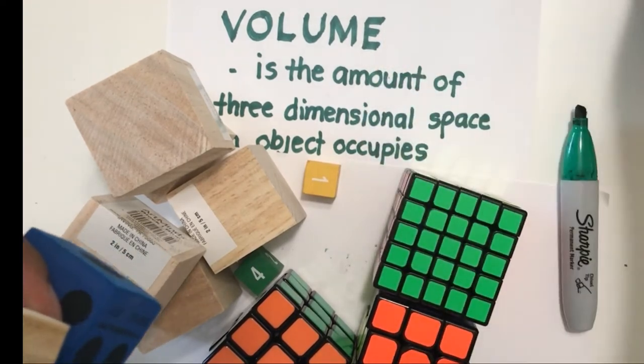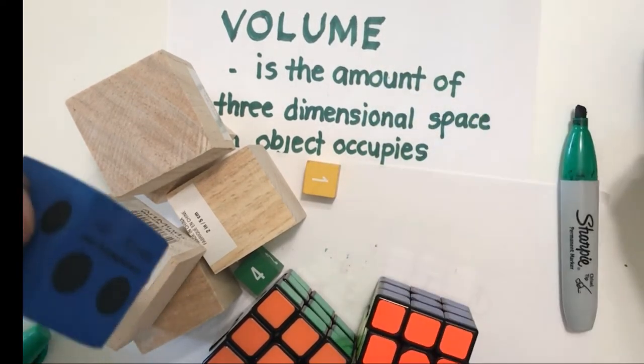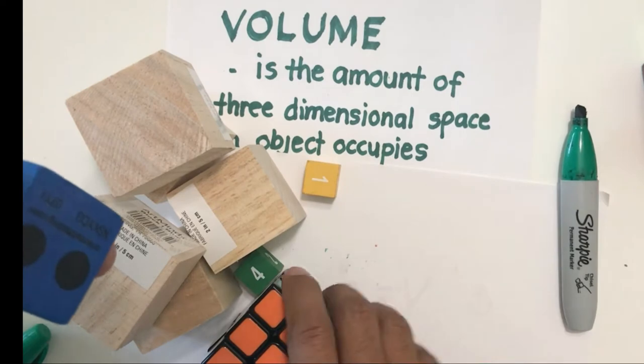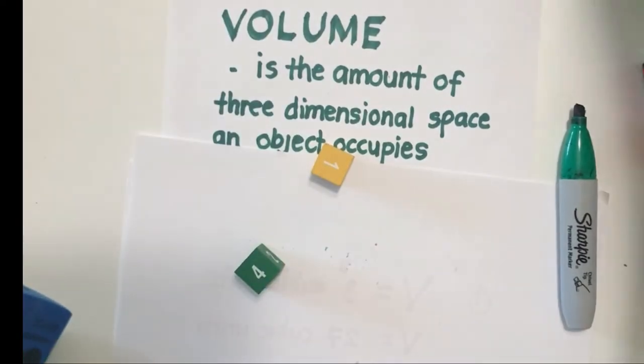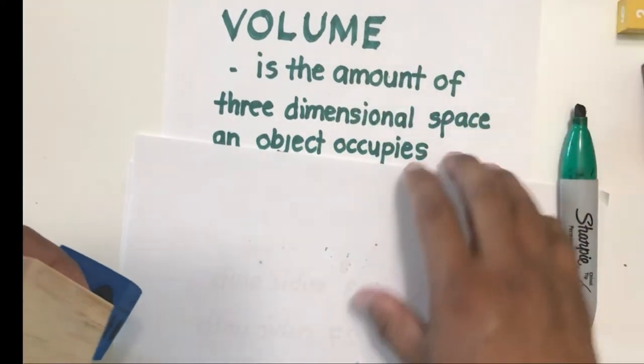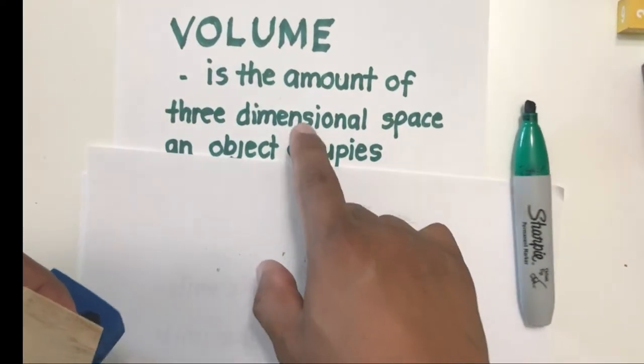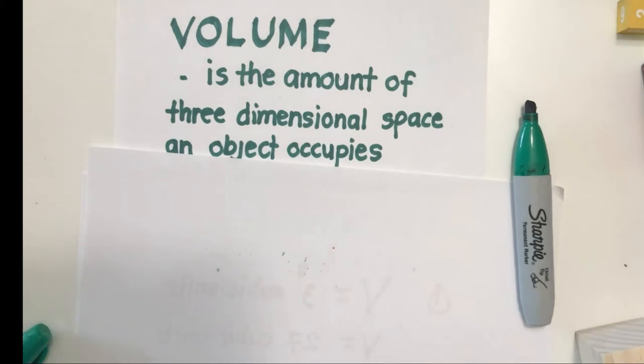The reason behind that is because we are going to use this in order to develop our conceptual understanding of what a volume is. So let's begin with the definition of volume. Volume is the amount of three-dimensional space an object occupies.